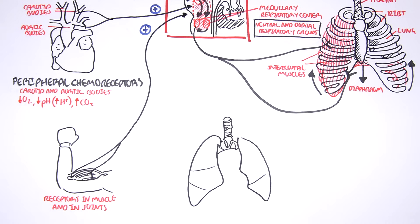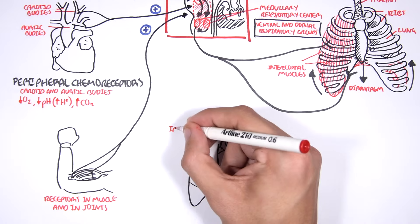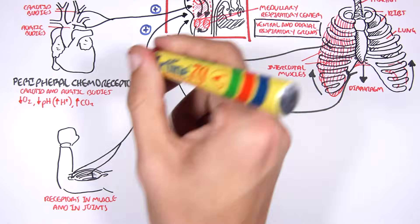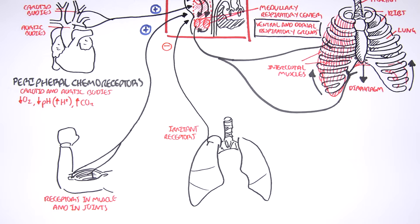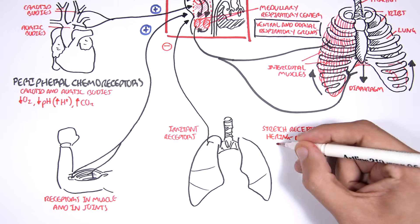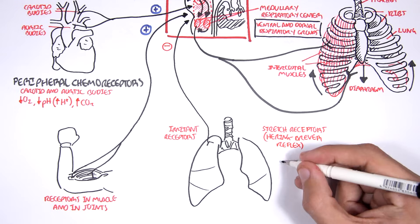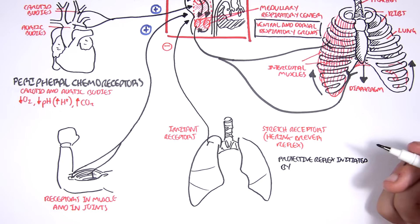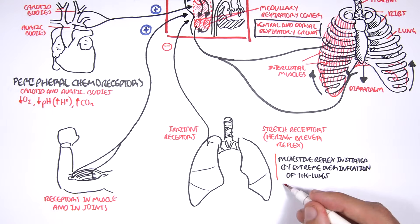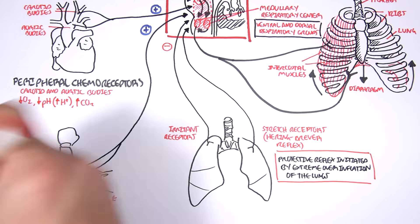Finally, you have receptors in your lungs that can influence the respiratory center in the brainstem. Firstly, irritant receptors are protective receptors that help blow off irritants; when stimulated, they will suppress the respiratory center to slow down respiration. You also have stretch receptors in the lungs, which cause the Hering-Breuer reflex — a protective reflex initiated by extreme overinflation of the lungs. When these stretch receptors are stimulated, they will suppress respiration and slow down the respiratory rate.